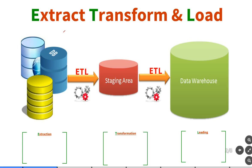As mentioned in the previous videos, data is read from heterogeneous source systems and loaded into a staging table, and then after the transformations are complete it is loaded into a data warehouse. The complete process of extracting, transforming, and loading the data into the warehouse is called ETL. It is not a one-off process because data in the operational and source systems keeps on changing, so it is a regular process.